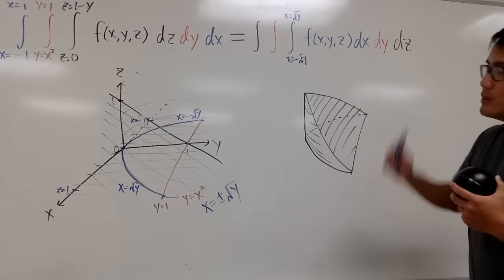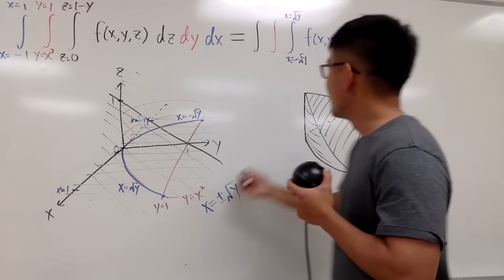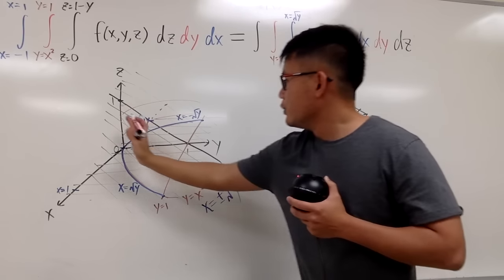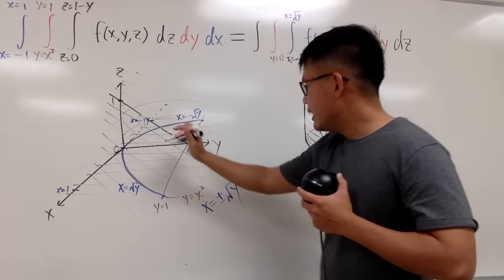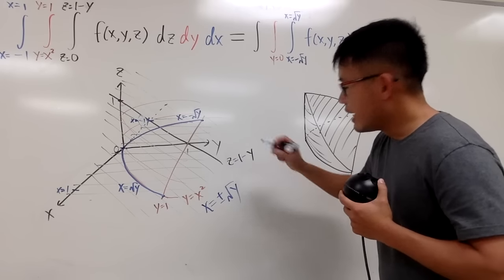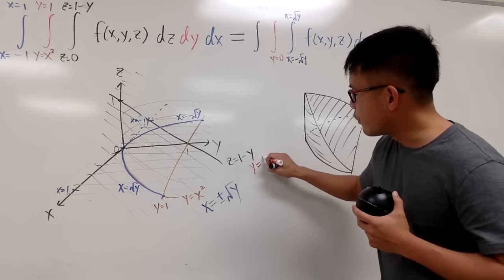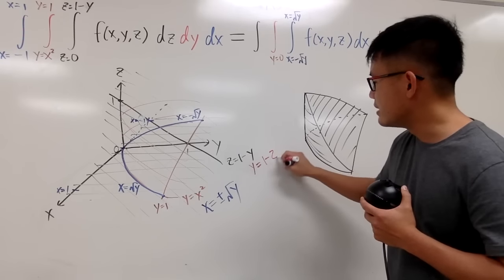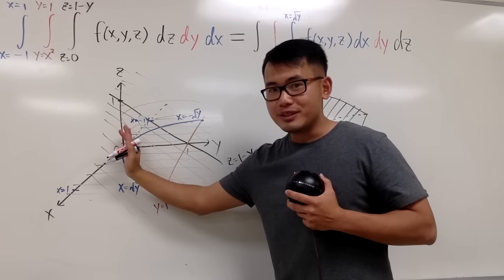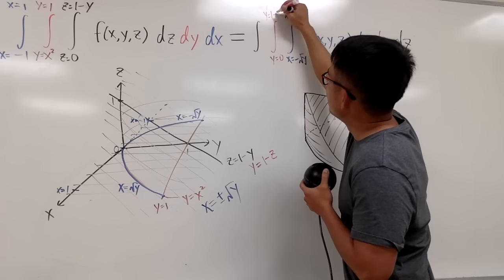Now from y to z: y starts at 0. Looking at this line, it has equation z equals 1 minus y. We can rearrange: move y to one side and z to the other, giving y equals 1 minus z. So y goes from 0 to 1 minus z.